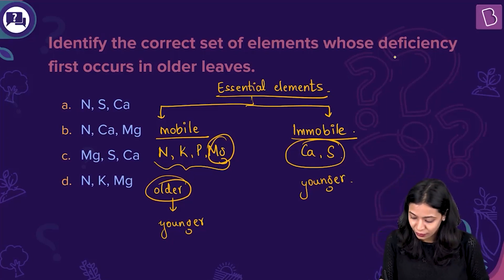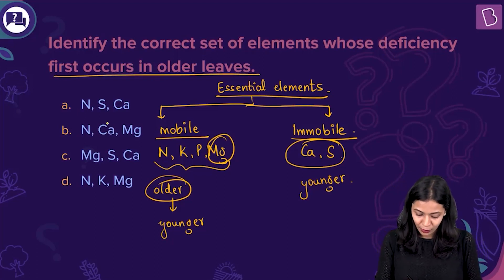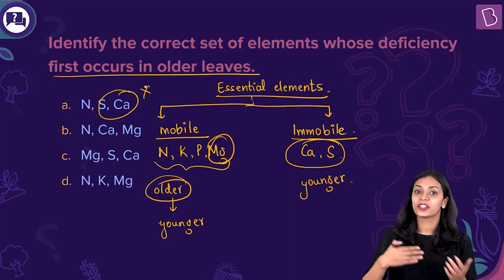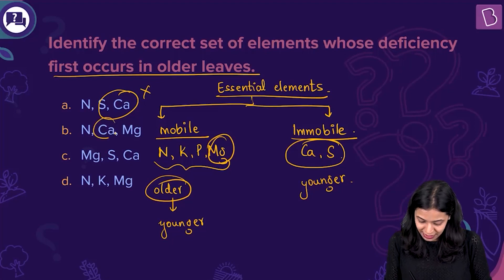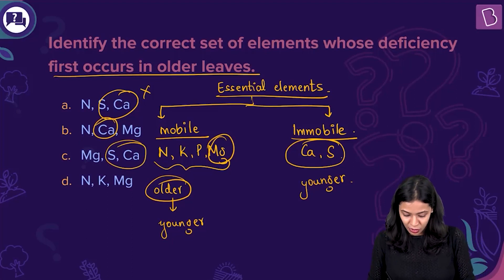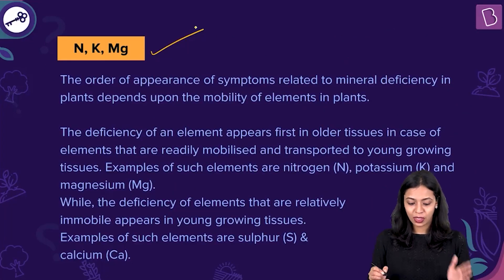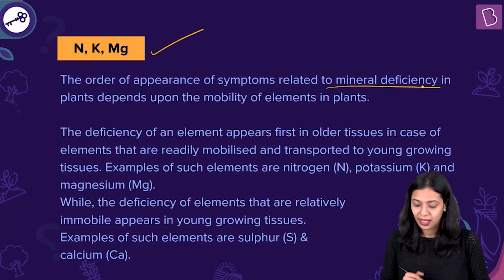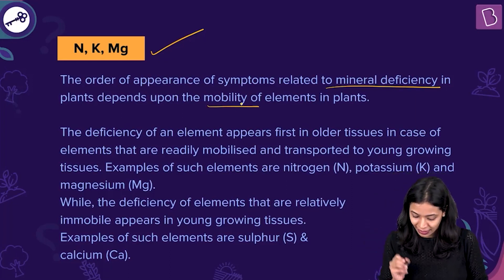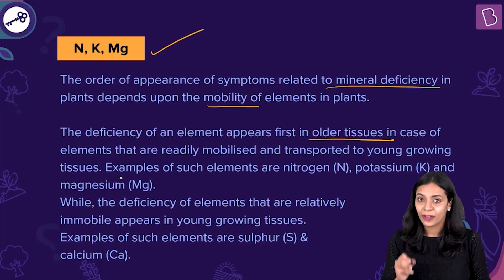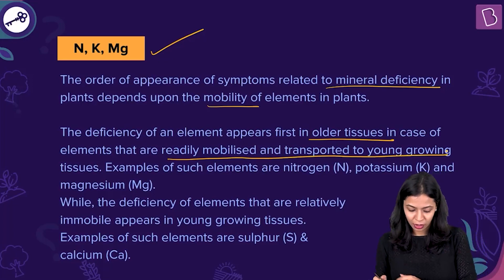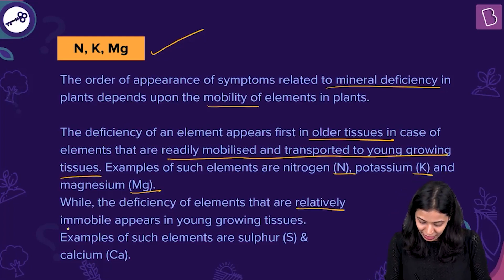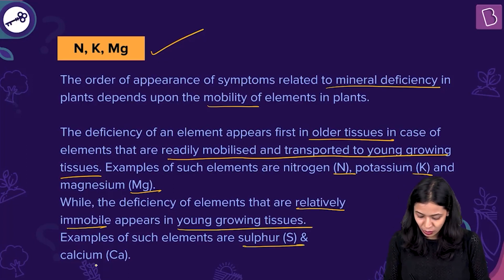The question asks to identify the set of elements whose deficiency first occurs in older leaves. In option A, we have nitrogen, sulfur, and calcium — sulfur and calcium are incorrect because they are immobile, so their deficiency appears first in younger leaves. Option B has calcium, making it incorrect. Option C has calcium and sulfur again, making it incorrect. So the correct answer is option D: nitrogen, potassium, and magnesium. The deficiency of elements that are readily mobilized and transported to young growing tissues appears first in older tissues, while immobile elements like sulfur and calcium show deficiency first in young growing tissues.